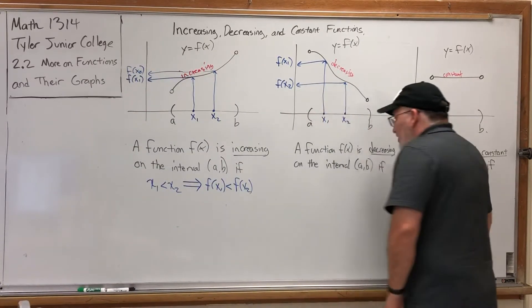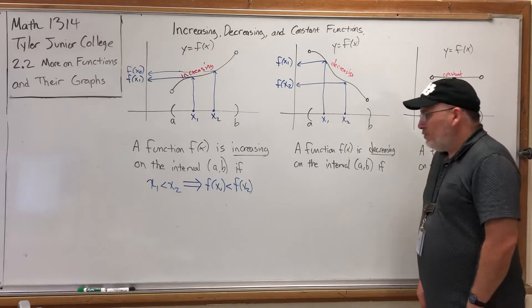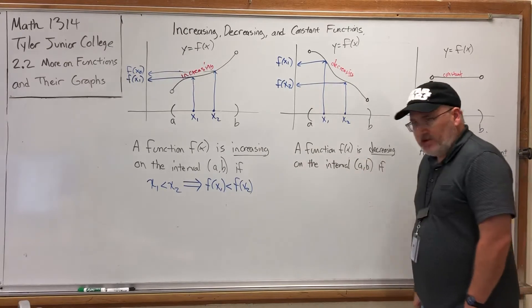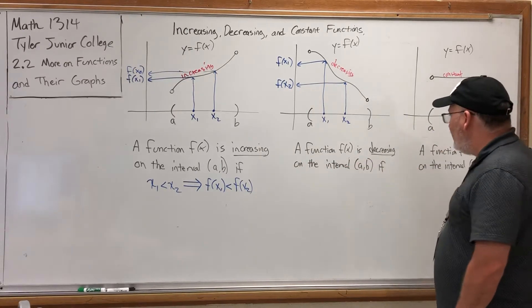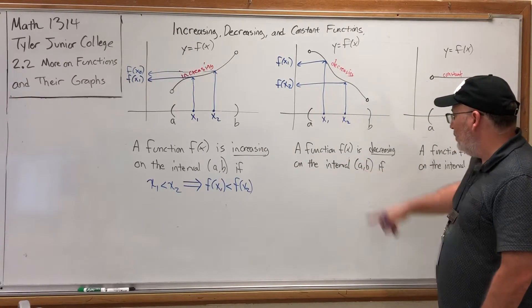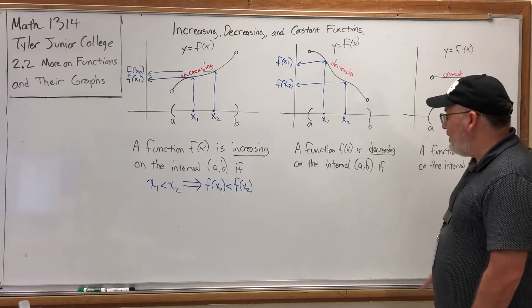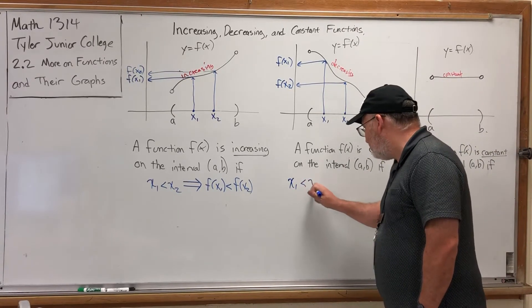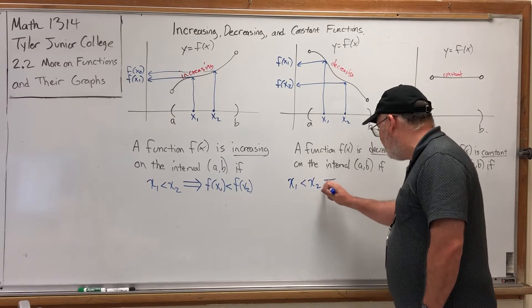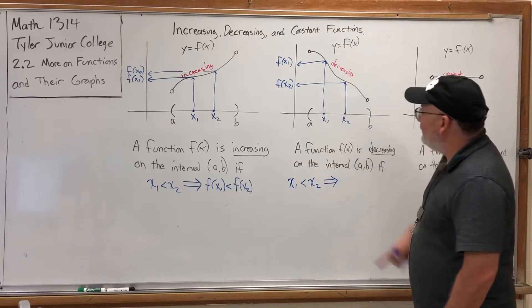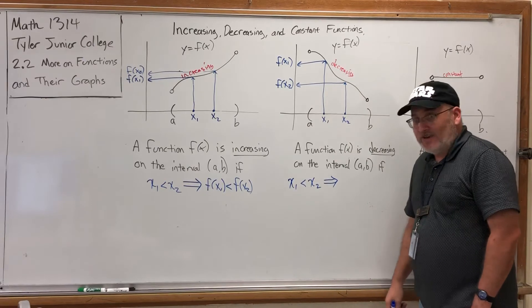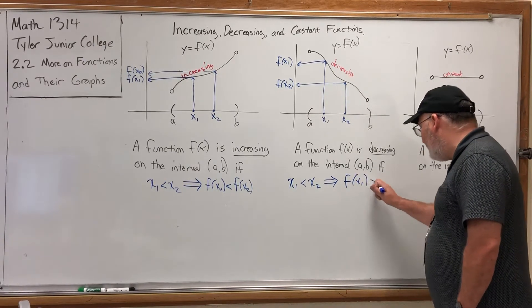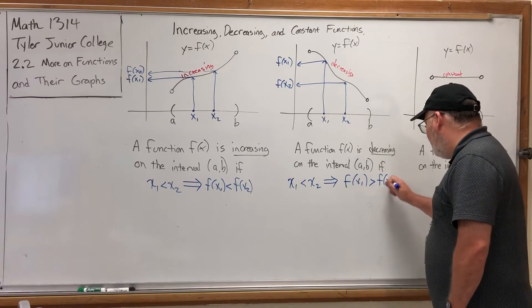So have you figured out the definition of a function being decreasing? It starts with the same implication. A function f of x is decreasing on the open interval (a, b) if x1 is less than x2 implies what? Not that the first output is less than the second one, but the first output f of x1 is greater than the second output f of x2.